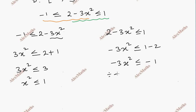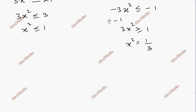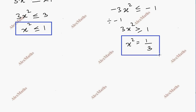If we divide by minus 1, the inequality reverses. For part 1, we get x squared less than or equal to 1. For part 2, x squared is greater than or equal to 1 by 3.